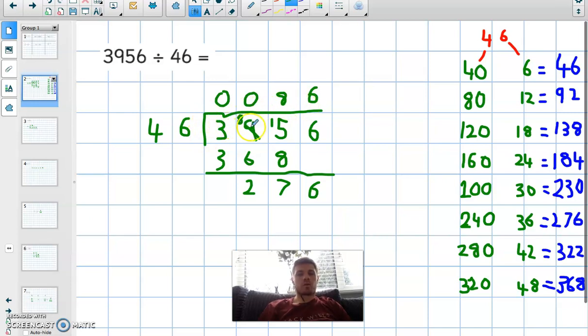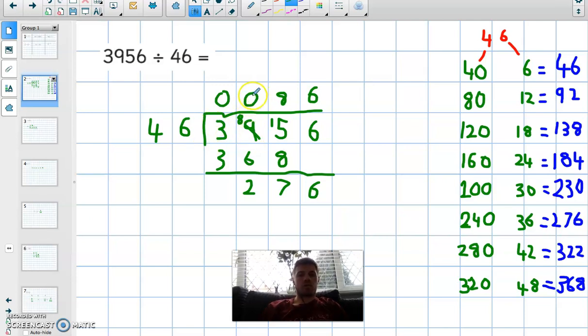So first of all I look to see how many 46s are in three. There are zero. I then look to see how many 46s are in 39. There are also zero. Now how many 46s are in 395? This is where it gets tricky, so I need to use the partitioning method to work out my 46 times table.